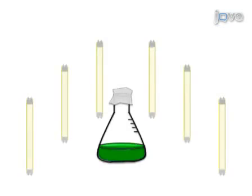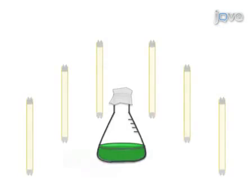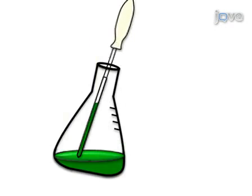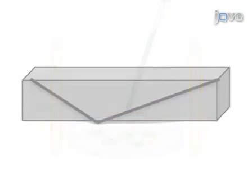The gametes are then combined in a single flask for mating. Samples are spotted on a TAP-Agar plate in light, then wrapped in foil for zygospore maturation.